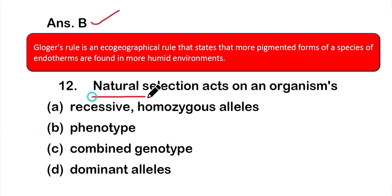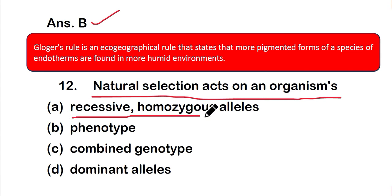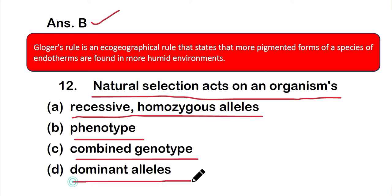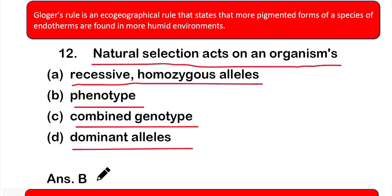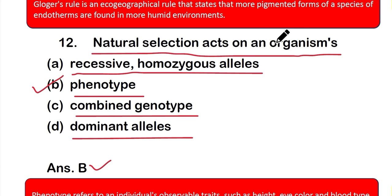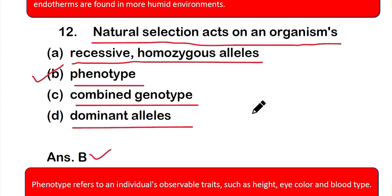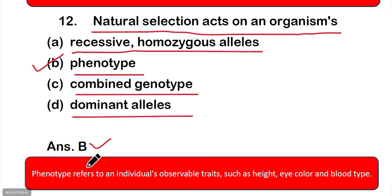Question 12: Natural selection acts on an organism's — option A: recessive homozygous allele, option B: phenotype, option C: combined genotype, or option D: dominant allele. The correct answer is option B — phenotype. Natural selection acts on an organism's phenotype. Phenotype refers to an individual's observable traits such as height, eye color, and blood type.